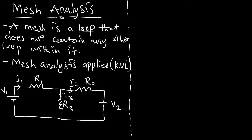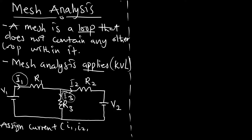In mesh analysis we are not going to pay attention to the currents assigned directly. We are going to assign another current. The original currents are assigned in uppercase — I1, I2, I3. We are going to assign another current in lowercase: i1, i2, up to the number of meshes we have. If we have three meshes we get i1 to i3; if two, we get i1 and i2.